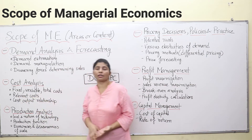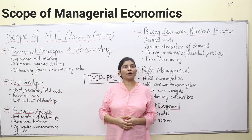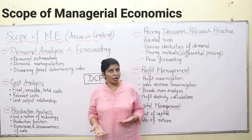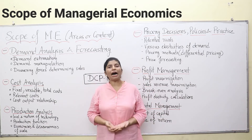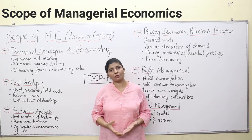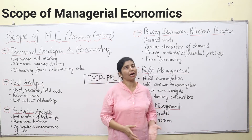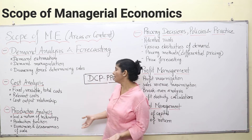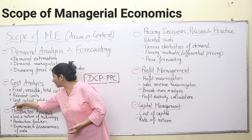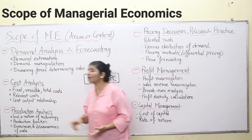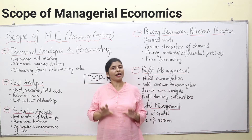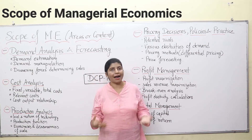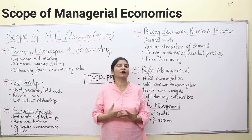Relevant cost — many times you purchase something at a very high rate that is not relevant at all. So you have to take note of existing costs in the market and purchase things at relevant cost. Then, cost-output relationship. This is a very important concept to understand because if your costs are high, then your profits will be low — there is an inverse relationship between your cost and profits.